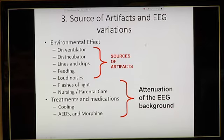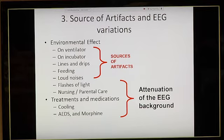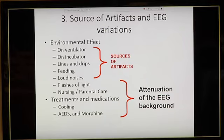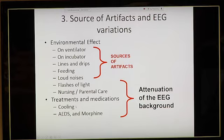The EEG is very susceptible to noise. In the neonatal ICU environment, the ventilator, the incubator, and lines and drips are sources of artifacts that interfere with interpretation. Feeding also creates artifacts. Parents or nurses patting the baby produces an artifact that can look like a seizure. Loud noises, flashes, lights, and nursing or parental care create changes on the EEG. Additionally, medications — including cooling, anti-epileptic drugs, and morphine — will produce an attenuation of the EEG background activity.